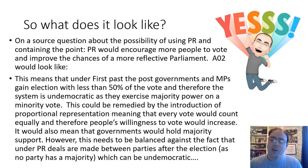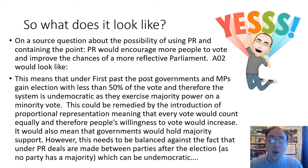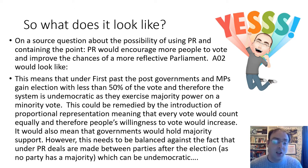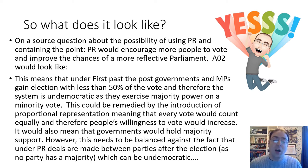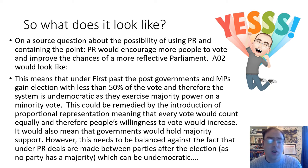I would suggest that with the source question, as you go through, you find your three points on one side and three points on the other, then match them and deal with those two together — they should be opposite or clash in some way, and teasing that out will get you your AO2 marks. So here's what one looks like. This is a source question about proportional representation. The point is: proportional representation would encourage more people to vote and improve the chances of a more reflective parliament. My AO2 analysis reads: under first past the post, governments and MPs gain election with less than 50% of the vote, which is undemocratic as they exercise the majority of power with a minority vote. This could be remedied by proportional representation, meaning every vote would count equally and people's willingness to vote would increase.